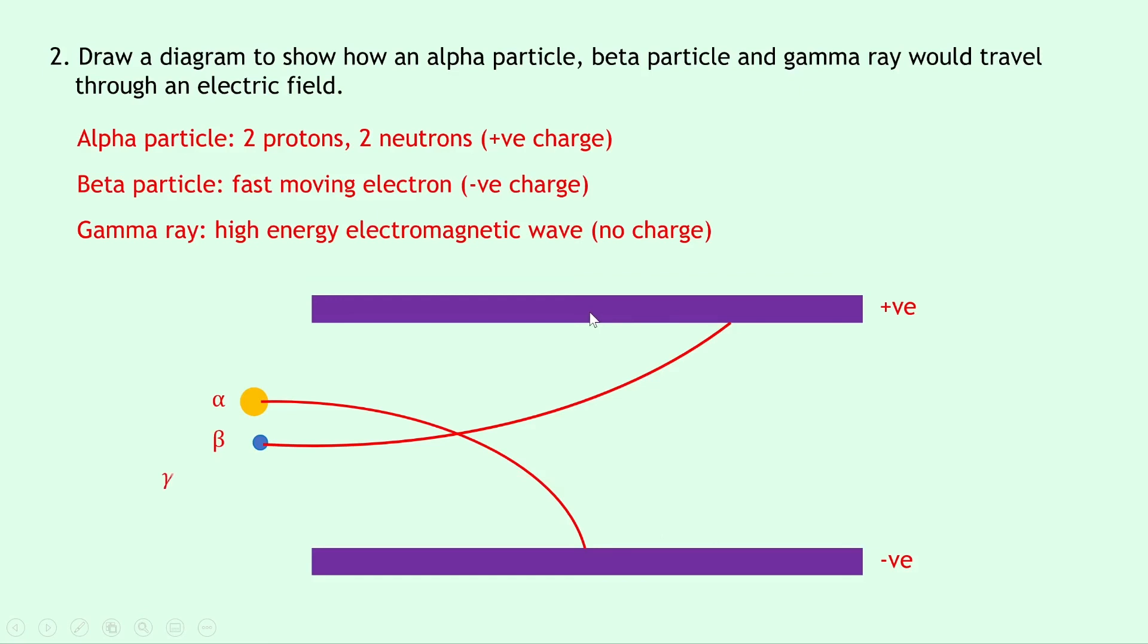And lastly we have the gamma ray which is an electromagnetic wave. So what would happen to this because it's got no charge is it would just pass straight through the electric field and that's because it's got no charge so it's not going to be attracted towards the positively charged plate or the negatively charged plate and it's also not going to be repelled away from either of those plates. So it would pass straight through the electric field.